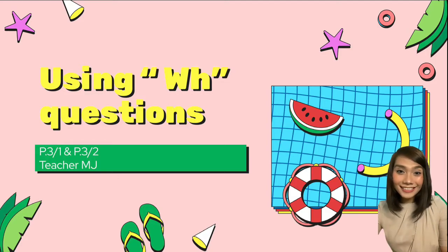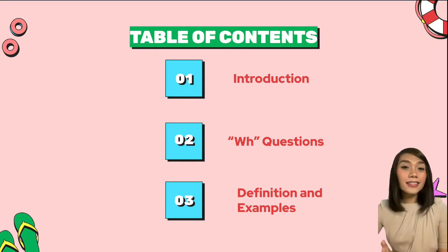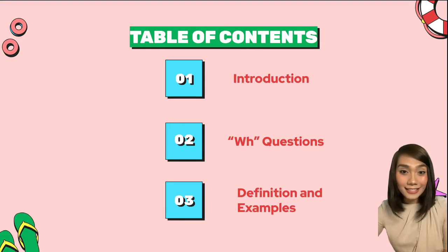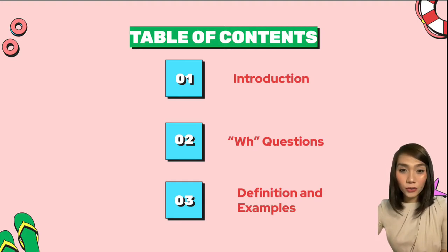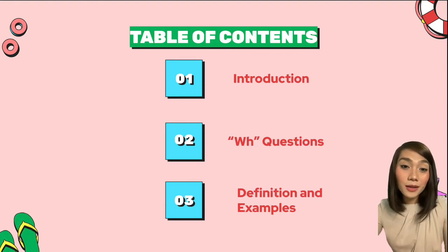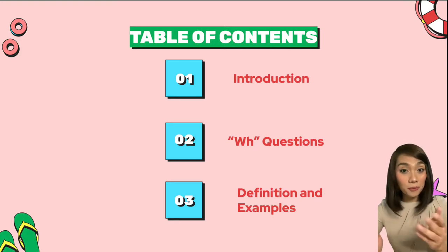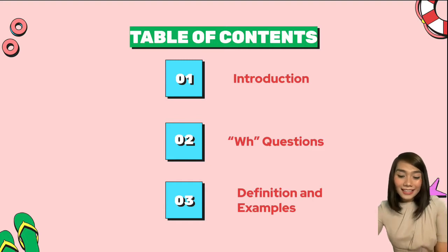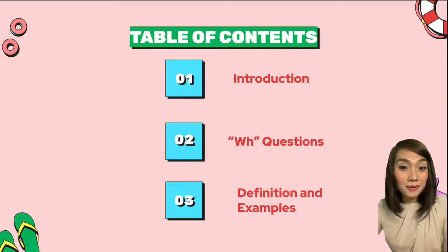Now, are you ready? All right! Come on! Let's have the table of contents first. These are the things that we're going to be talking about in this lesson. First, as usual, we will have the introduction — I will introduce the lesson on what is the background of WH questions. Next, we will move on to the WH questions itself. All in all, we have seven WH questions, but for today I'm going to give you only the five most common ones that we use, and that's also in your book.